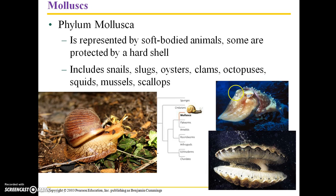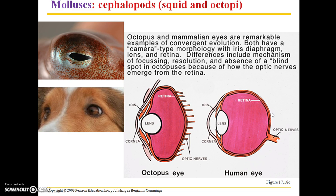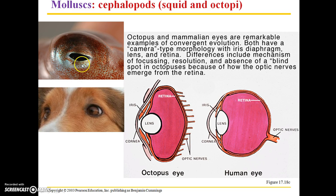They have many similarities with other molluscs, but their intelligence sets them apart. Squid and octopi are known as cephalopods. They have developed a very similar eye to vertebrate eyes — here you see either a squid or an octopus eye.